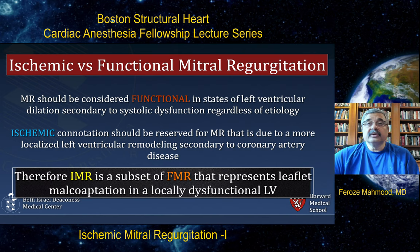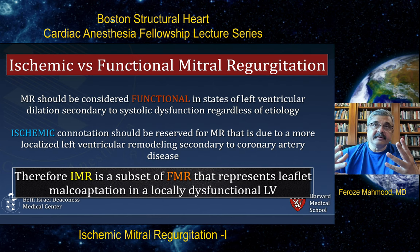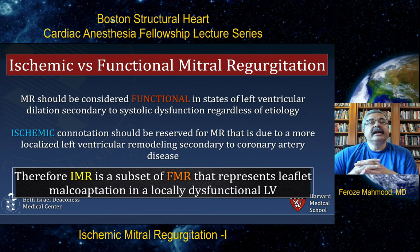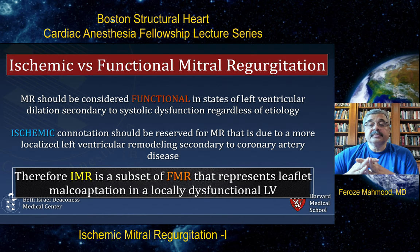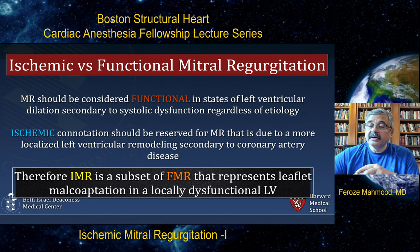The most important thing is the definition and the difference between ischemic and functional mitral regurgitation, which are often confused. Mitral regurgitation should be considered functional in states of global left ventricular dilation secondary to systolic dysfunction, regardless of etiology. The ischemic connotation should be reserved for MR due to more localized left ventricular remodeling secondary to coronary artery disease — specifically, localized wall motion abnormality leading to malcoaptation and tethering of the leaflets. Therefore, ischemic MR is a subset of functional MR representing leaflet malcoaptation in a locally dysfunctional LV or mitral valve apparatus.